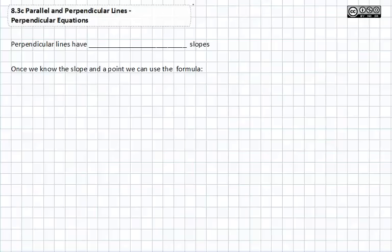As you may recall from video 8.3a, parallel lines have the same slope, but perpendicular lines have opposite reciprocal slopes. Once we know the slope and a point, we can use the formula y equals mx plus b.